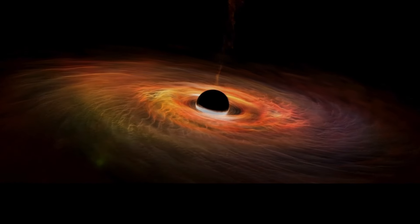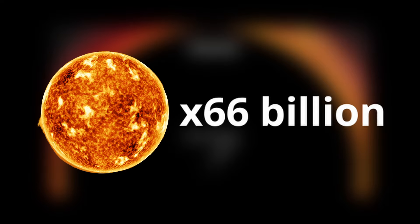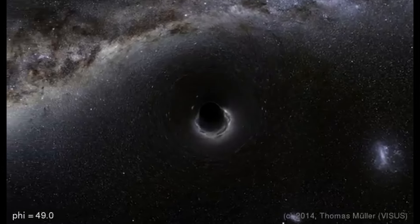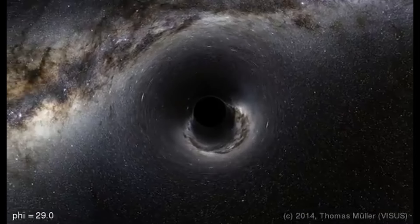The largest known black hole is TON 618, with a mass of about 66 billion times that of the Sun. Black holes distort not just space, but also time, creating effects like gravitational time dilation.